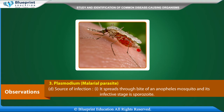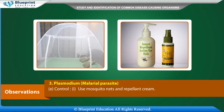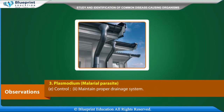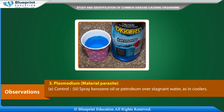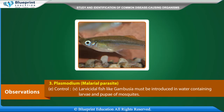Control measures: use mosquito nets and repellent cream, maintain proper drainage systems, spray kerosene oil or petroleum over stagnant water such as in coolers. Larvae and pupae may be destroyed by spraying DDT or BHC (benzene hexachloride). Larvicidal fish like Gambusia must be introduced in water containing larvae and pupae of mosquitoes.